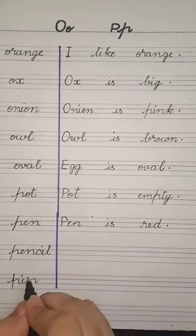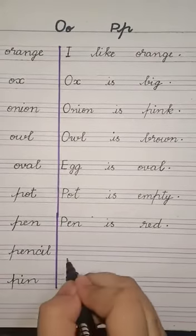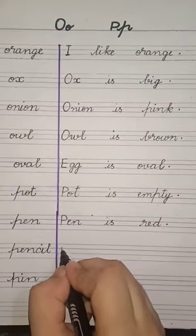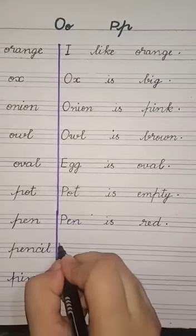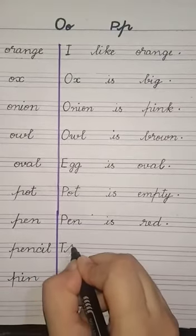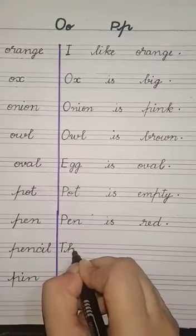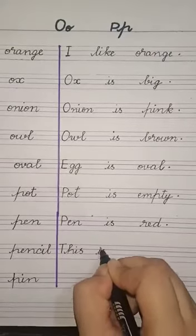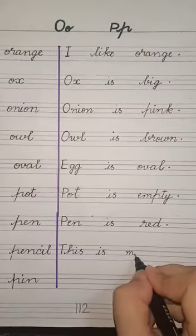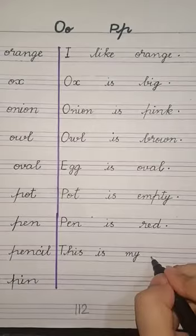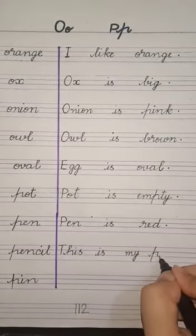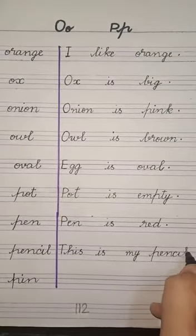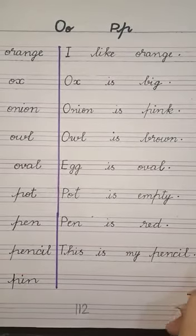Next step: Pencil. Pencil aap sab ke paas hoti hai. Ham sentence make karengi: This is my pencil. Ham write karengi - capital T, small H, 'this'. Finger gap, then 'is'. Again finger gap, then 'my'. And write pencil: P-E-N-C-I-L. And last, full stop.